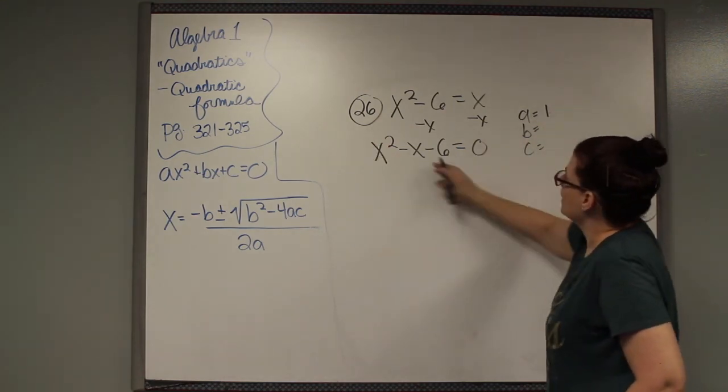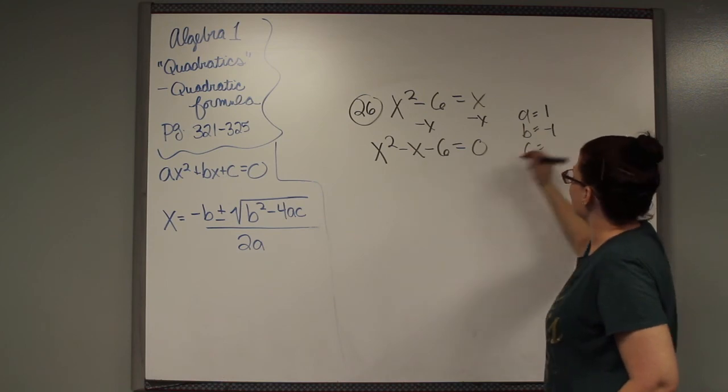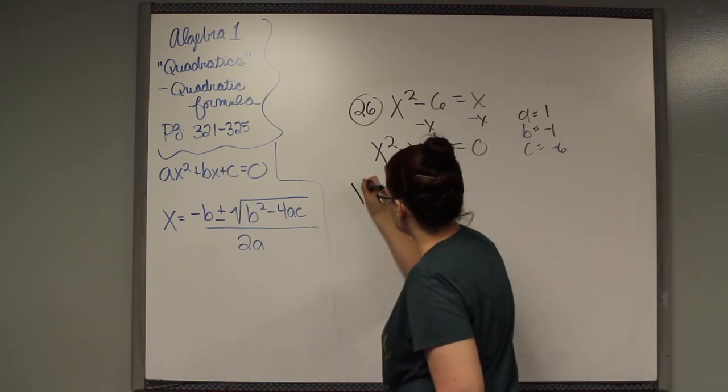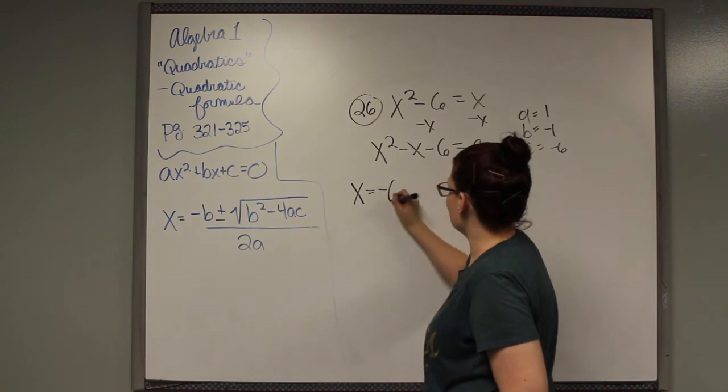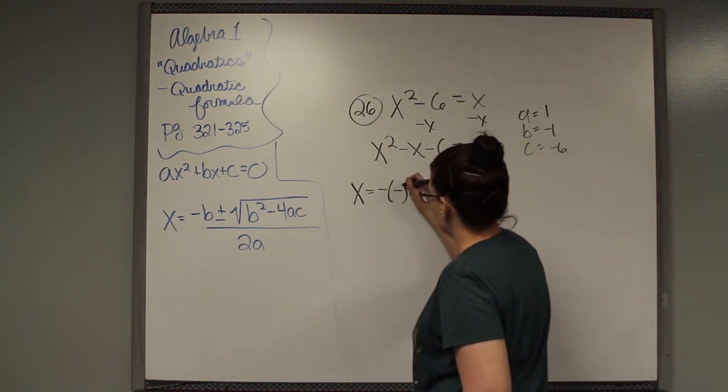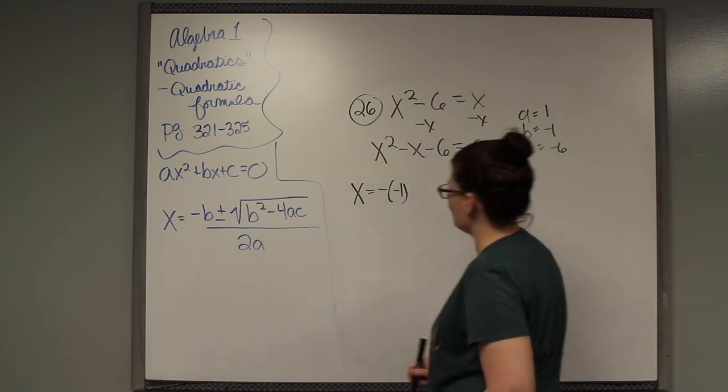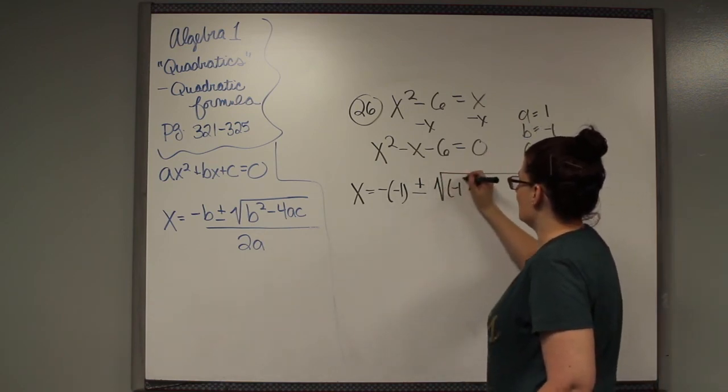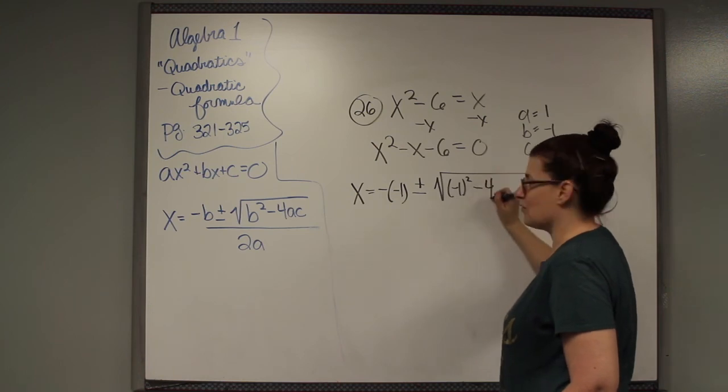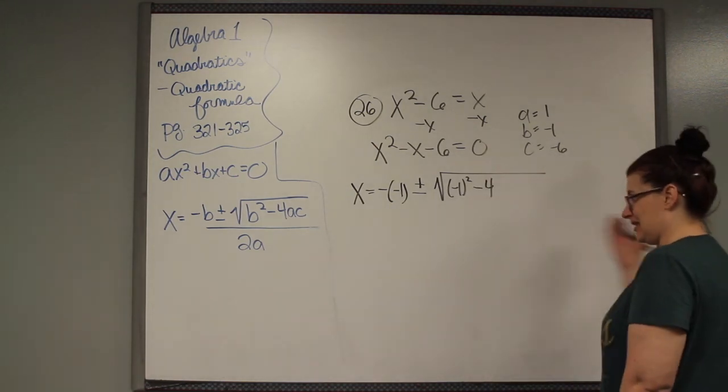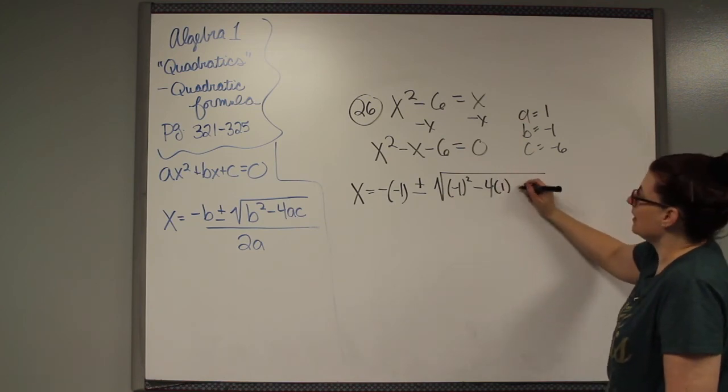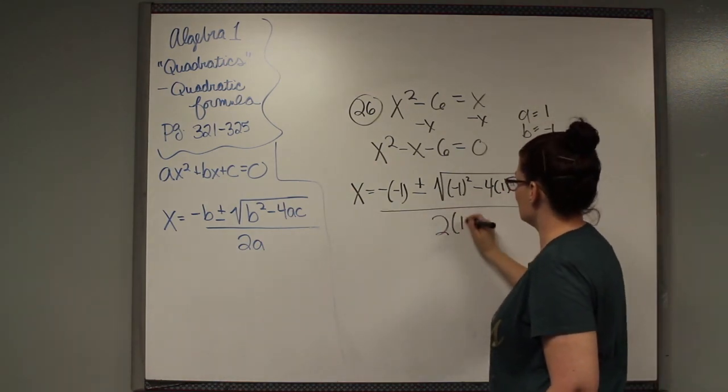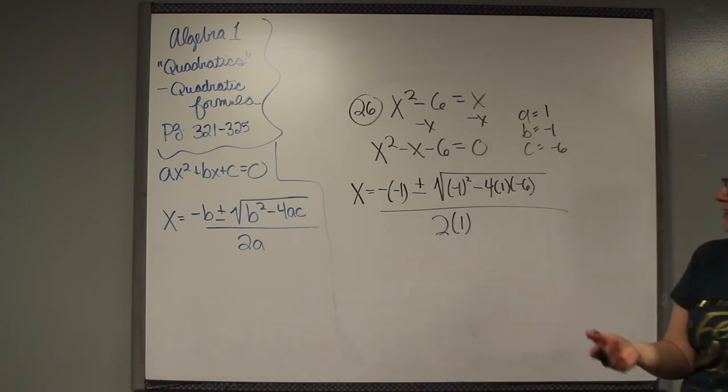Then I have to find my a, b, and c. That is a 1. That is a negative 1. And that is a negative 6. Key points. You have to have those. Then we're going to plug them in and solve. This would be negative, and then whatever b is, which is negative 1. Plus or minus b squared, which would be negative 1 squared minus. That 4 is always there. That negative 4 is always there. It's in the formula. A is 1 and c is negative 6 all over 2 times whatever a is, which is 1.